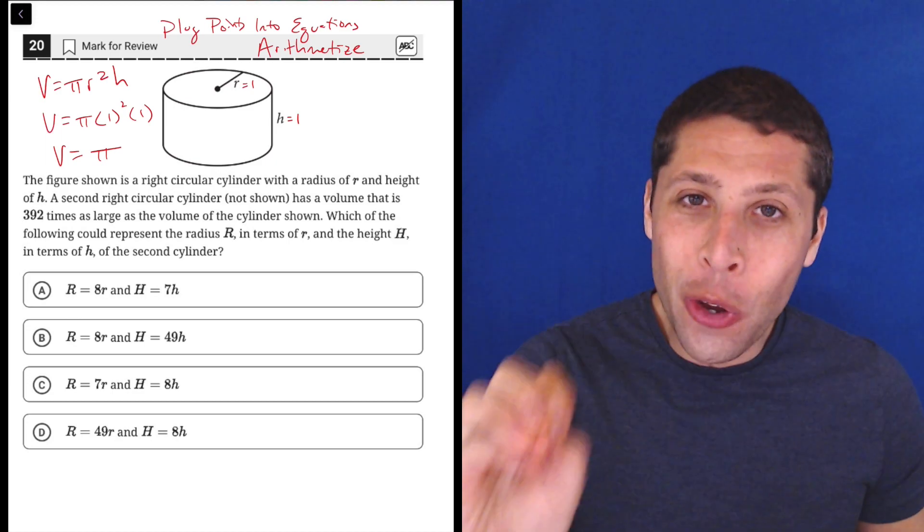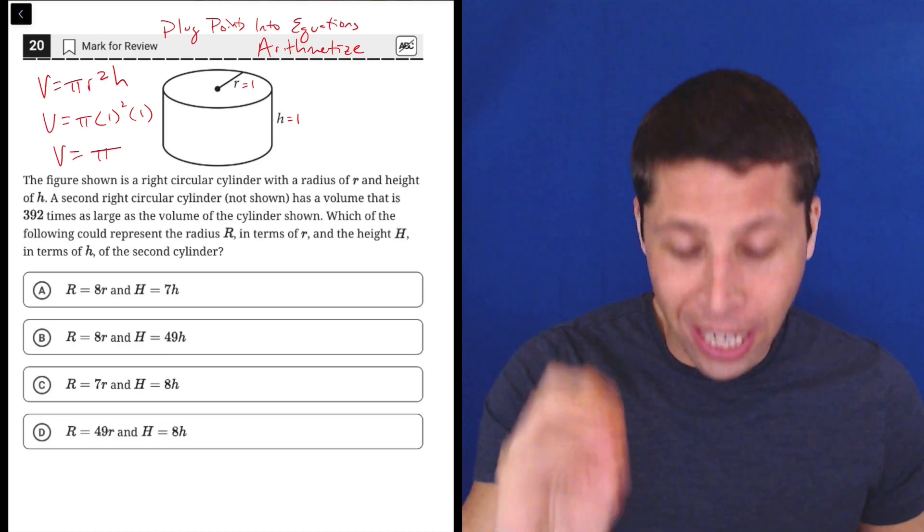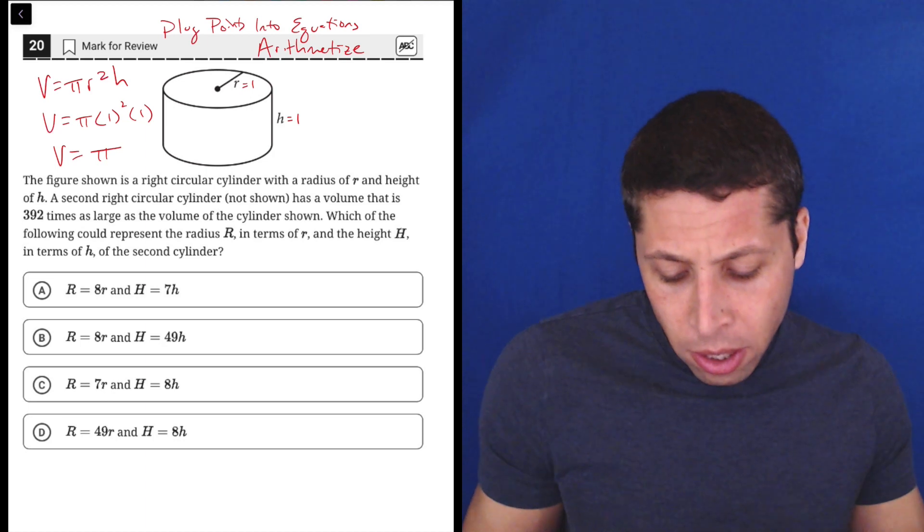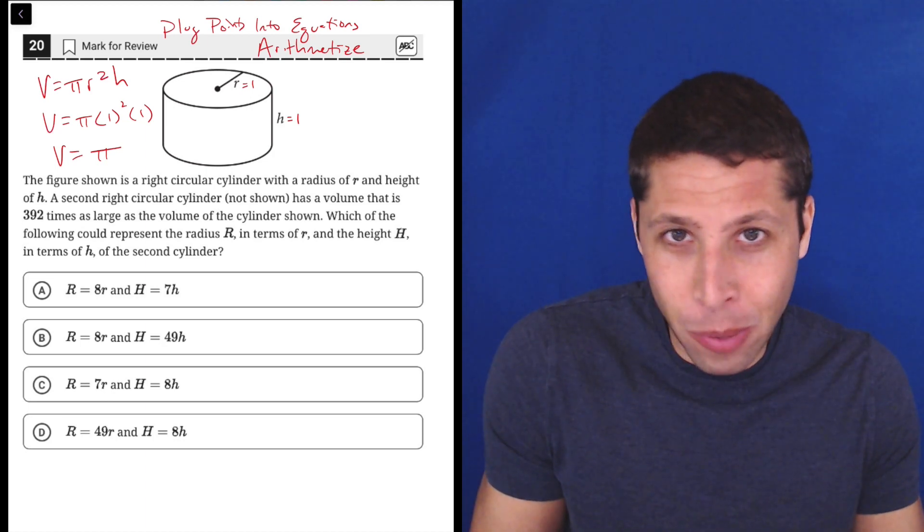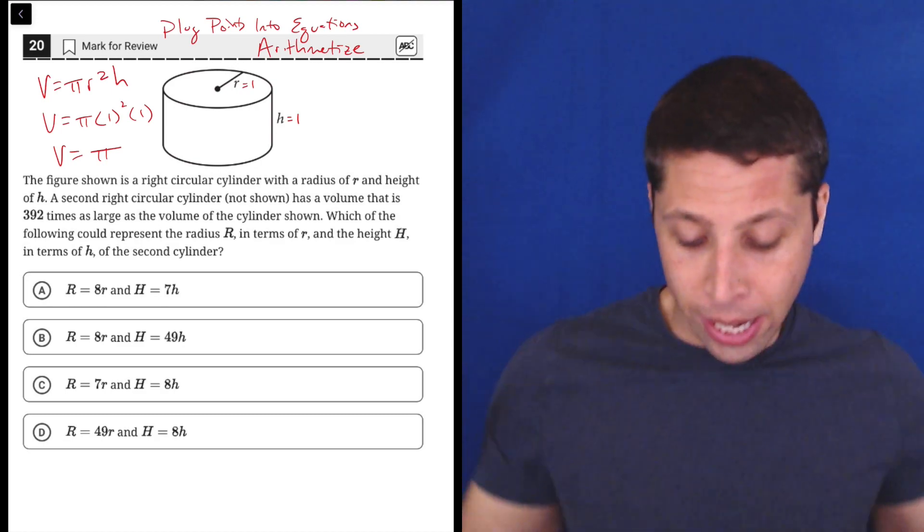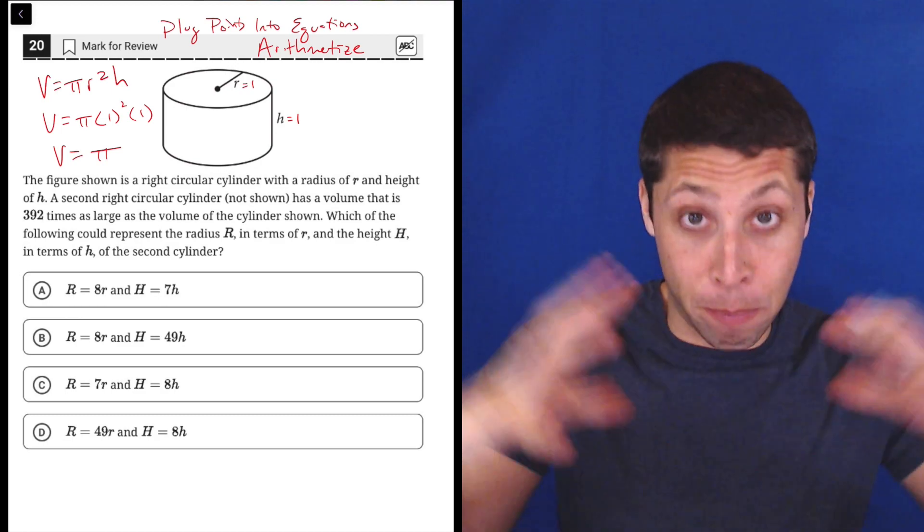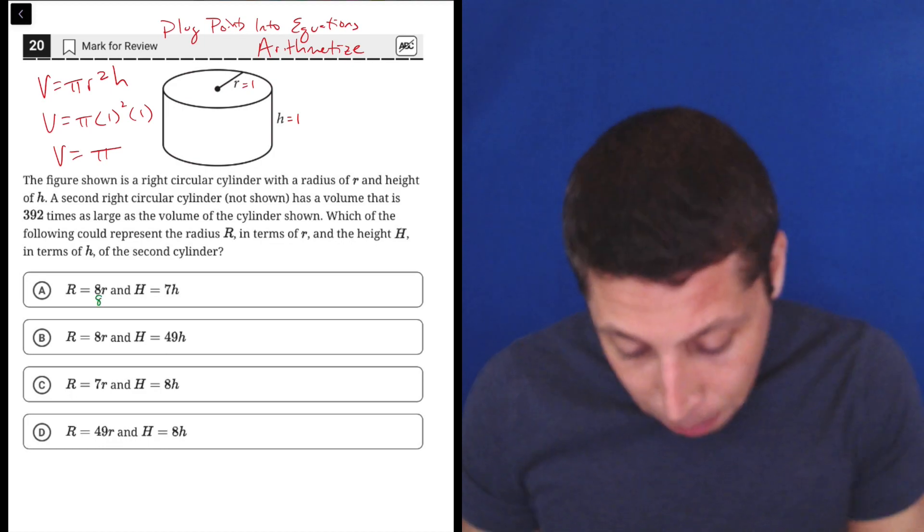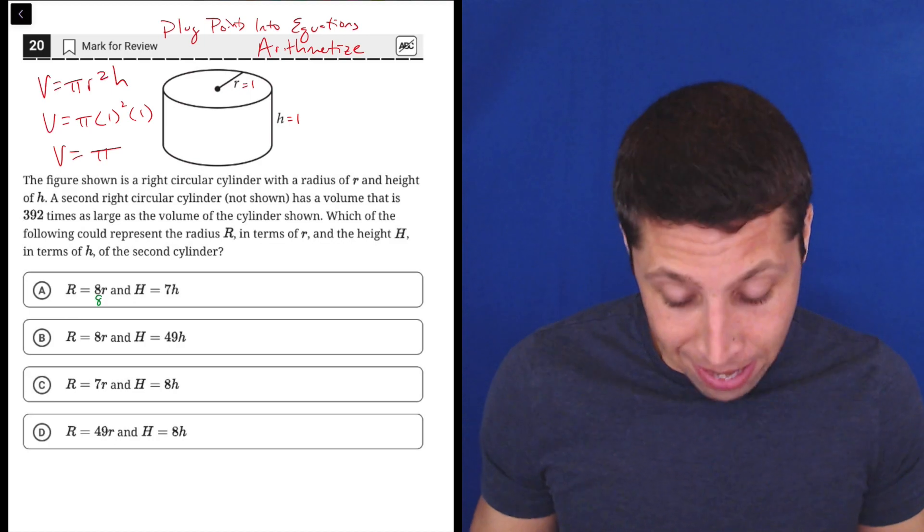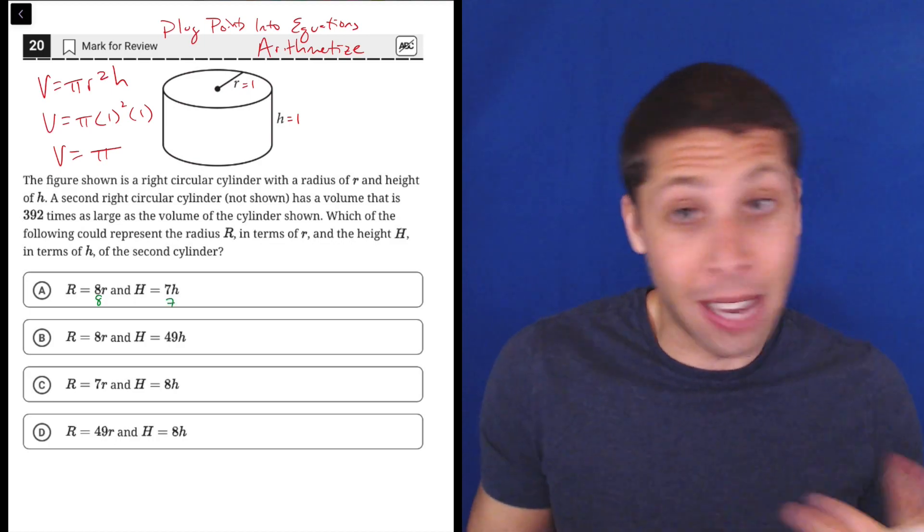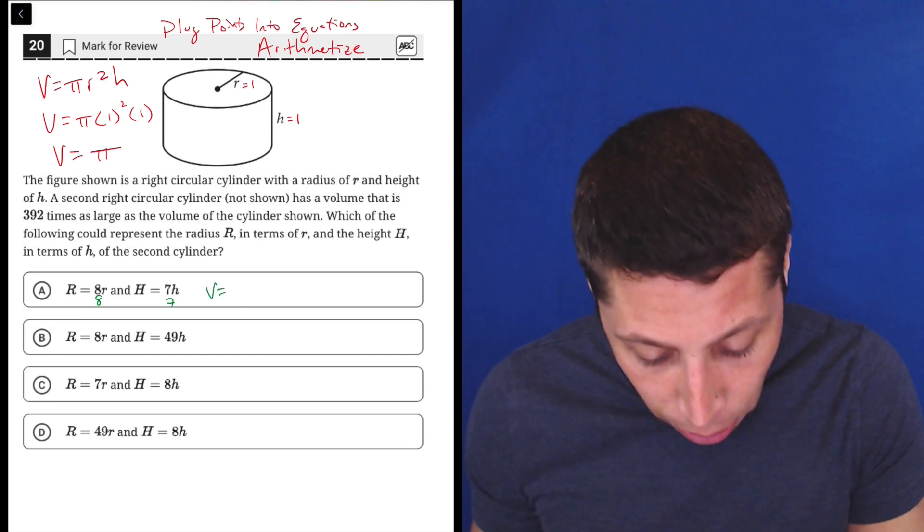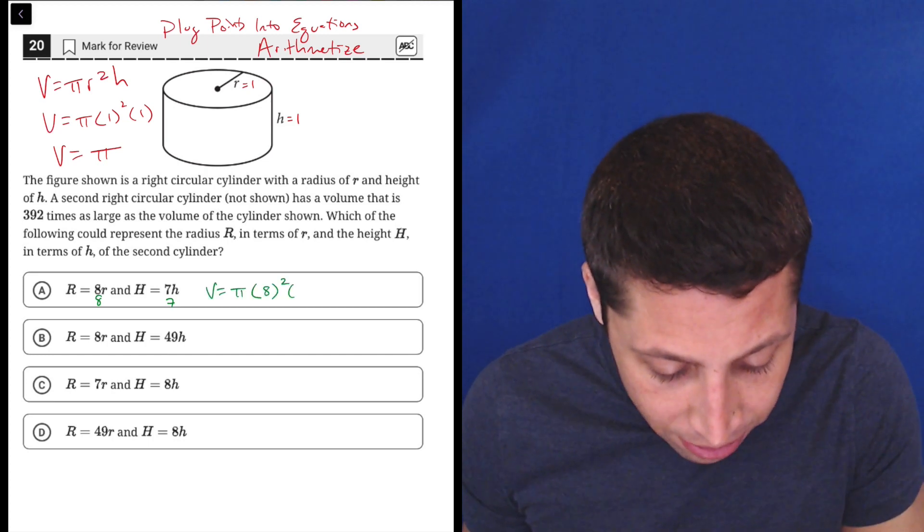Now we need the new volume to be 392 times bigger. And now instead of thinking about these weird dimensions, we can just use the dimensions that we made up when we arithmetized. So look at choice A, for example. Instead of the big radius of the big cylinder being this big R, now it's just eight. Because what did we make the little r? We made the little r one. So eight times one is eight. And the big H is seven because seven times the little h, which was one, is still seven.